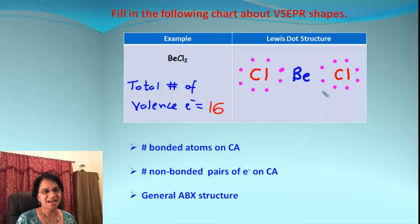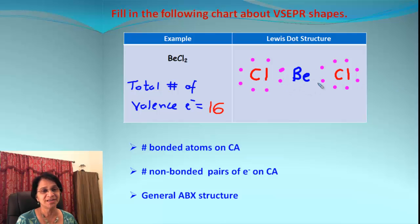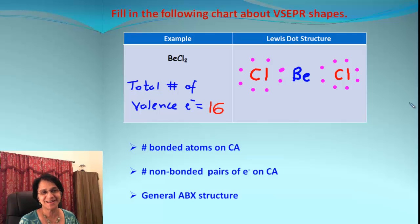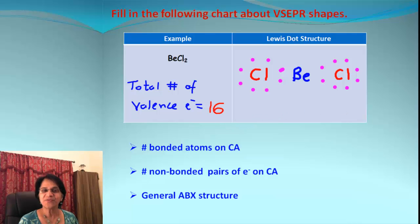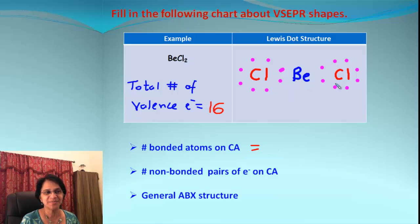Using this information, when we draw the Lewis dot structure, beryllium is the central atom with chlorine atoms around it. Each chlorine has eight electrons, while beryllium has only four electrons around it — but that is the exception to the octet rule. This is the correct Lewis dot structure for BeCl₂ and we used up all 16 electrons.